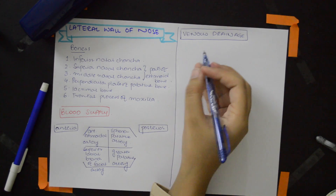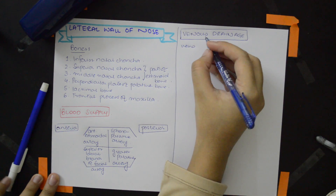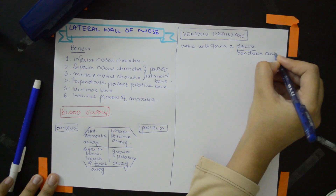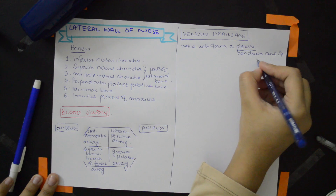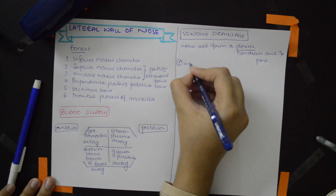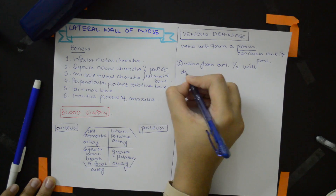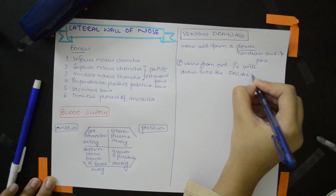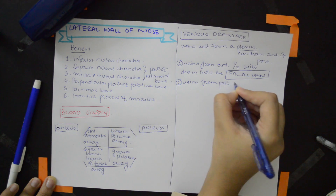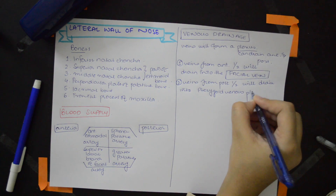Now the venous drainage. The veins in the lateral wall of the nose form a plexus that can drain anteriorly and posteriorly. Veins from the anterior half drain into the facial vein, whereas veins from the posterior half drain into the pterygoid venous plexus.